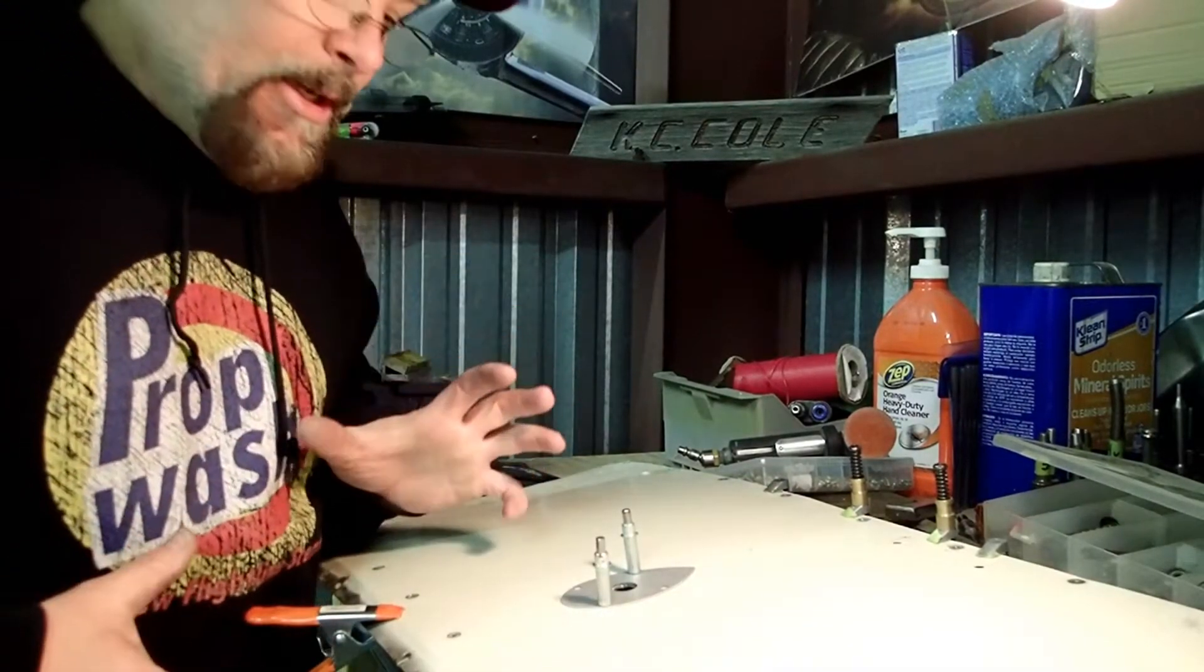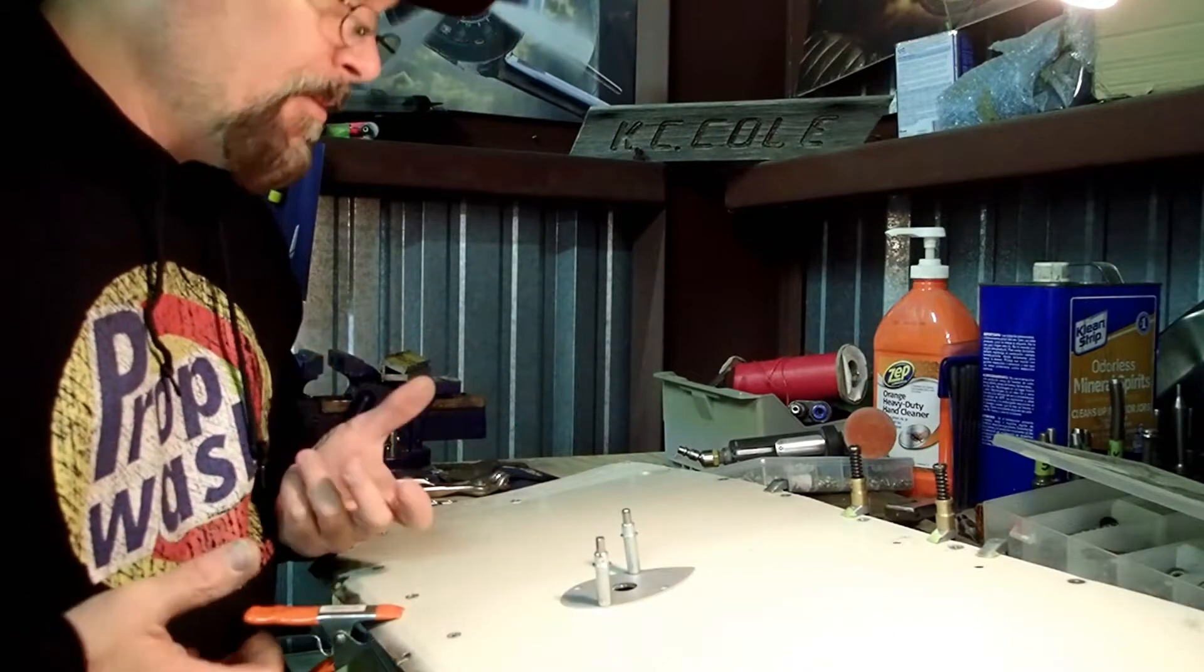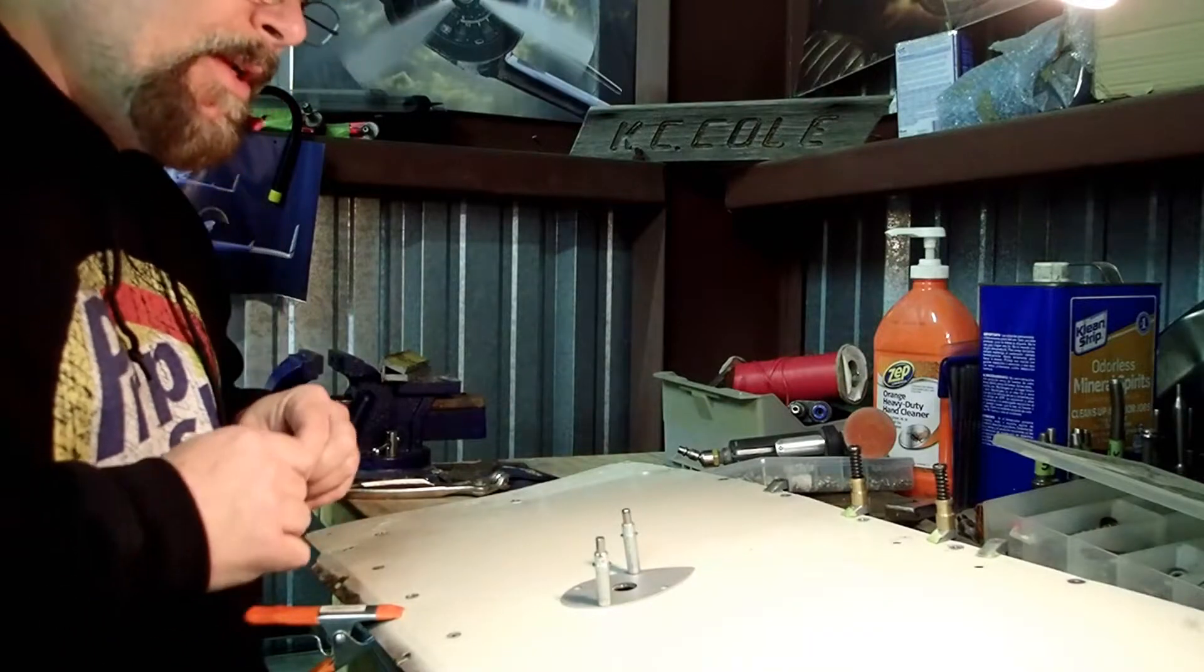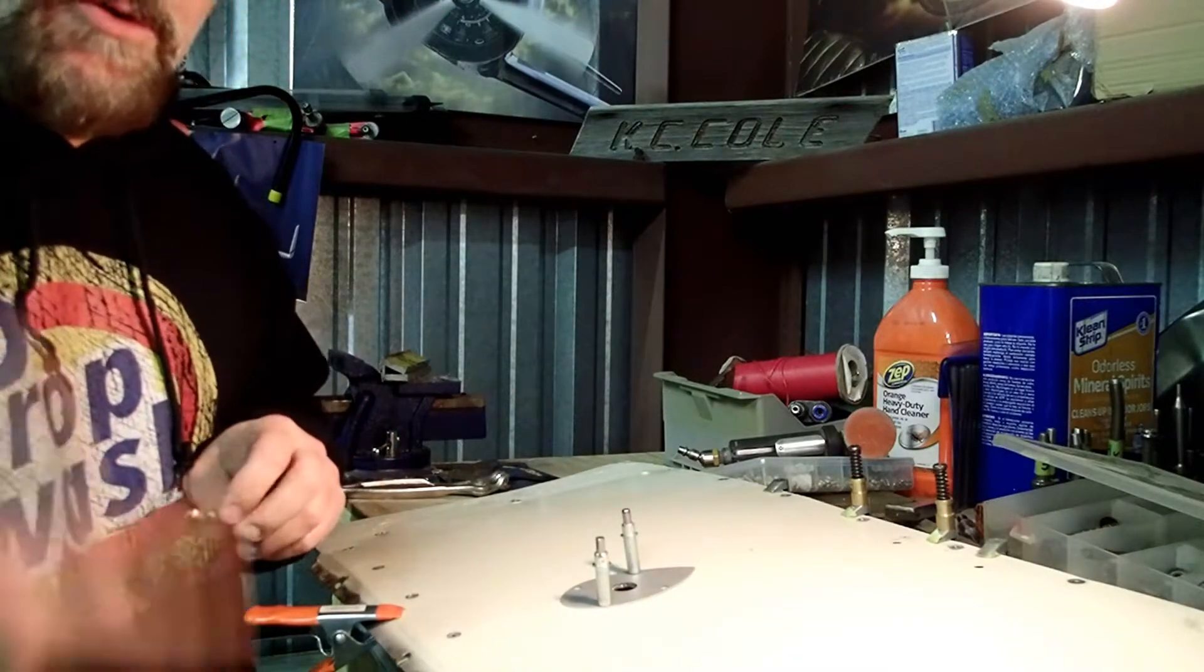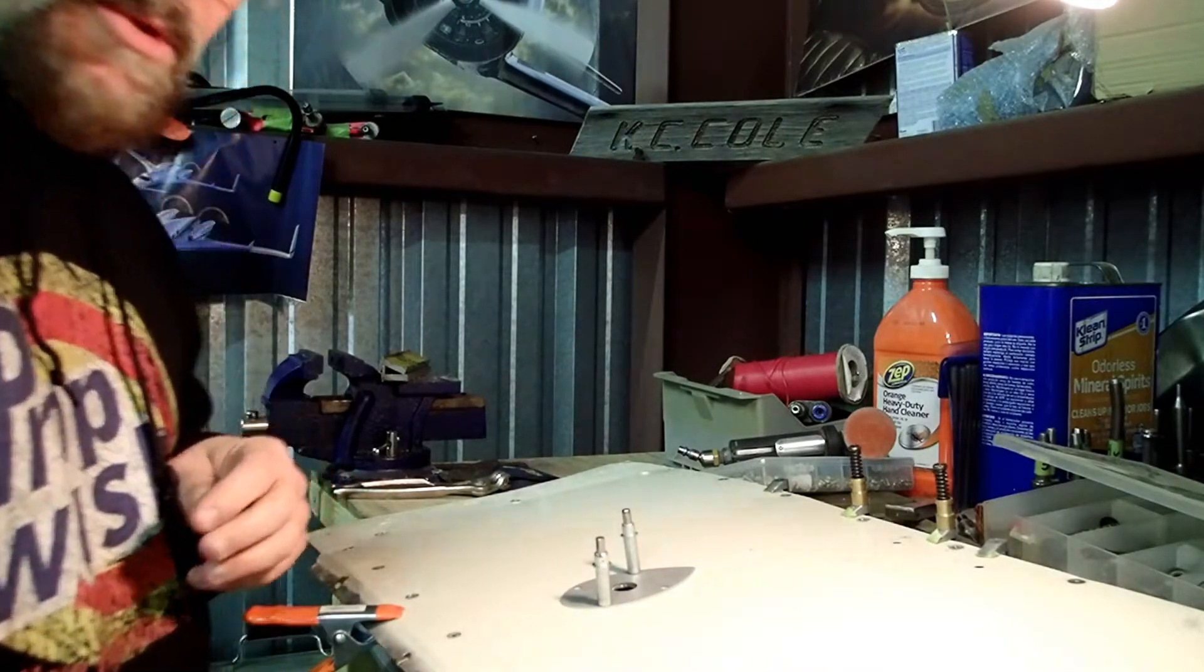I'm sure anybody who's done any kind of fabrication has run across this and gone, oh no, how am I gonna fix this? Trying to locate a hole where a hole already exists and that hole isn't in the center of the first one. We call that an eccentric hole, so it means where the centers are not on center.